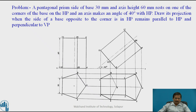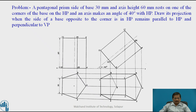Before going to the second stage, we will draw the first stage. As the axis is making 40 degrees with HP, we will be rotating or inclining the solid such that the axis makes 40 degrees. Prior to that, we will consider that the axis is perpendicular to HP and parallel to VP. Since it is resting on HP, its top view will be a pentagon and front view will be a rectangle.